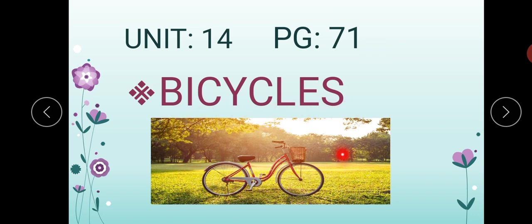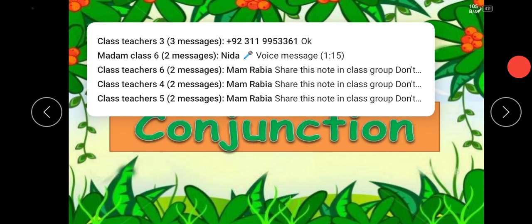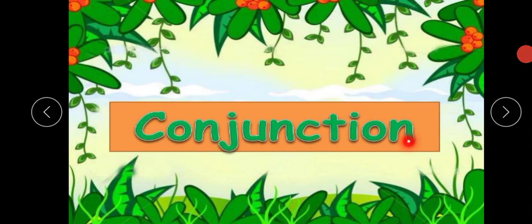We have done reading and explanation of this unit, and we also have question answers of this — we have solved them in the books. So this time we are going to start the conjunction. This is actually a part of speech. This is the book exercise, but let me discuss what conjunctions are first. Conjunction is actually a part of speech. Do you know how many parts of speech there are?